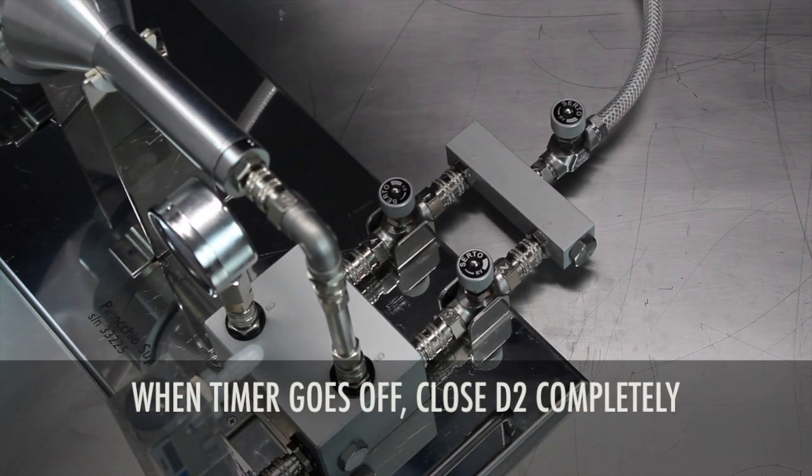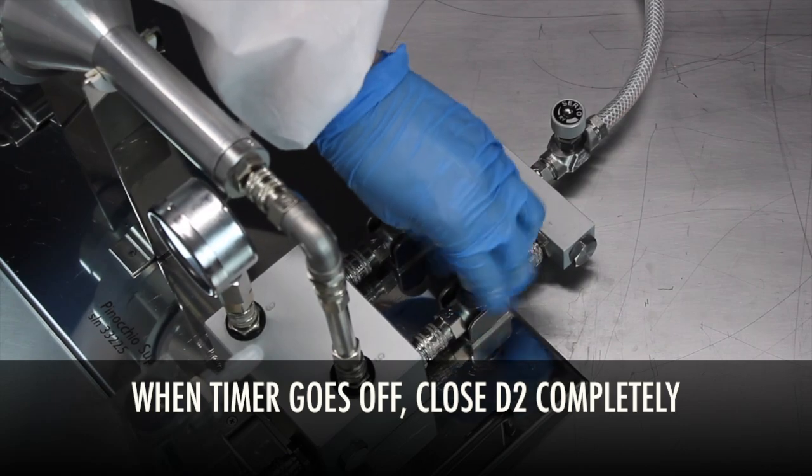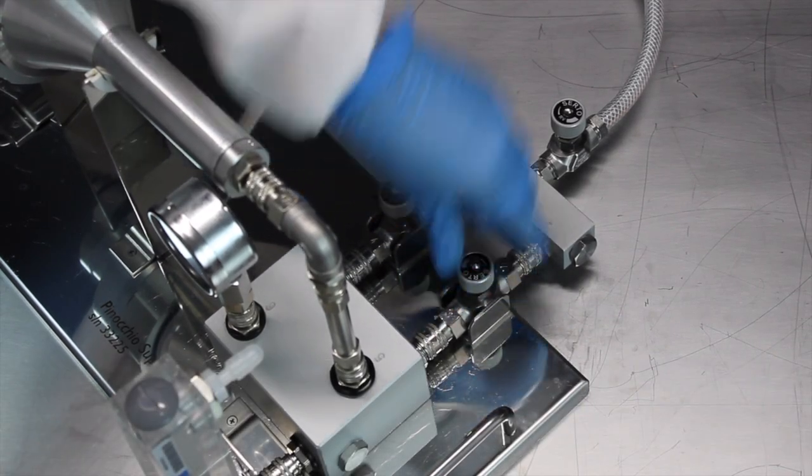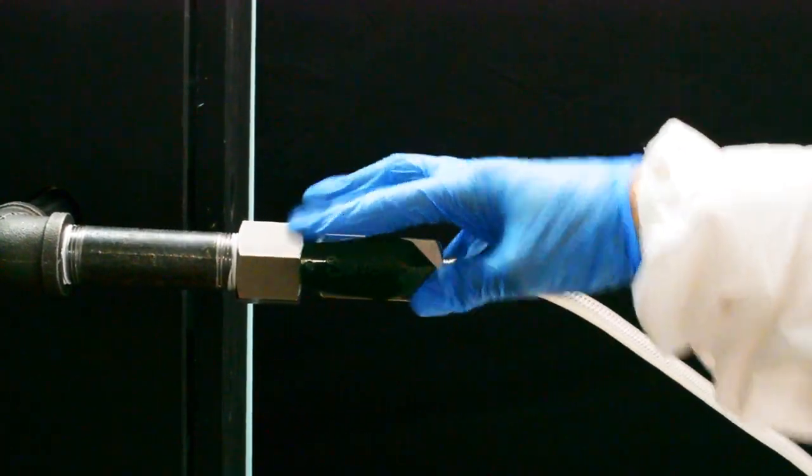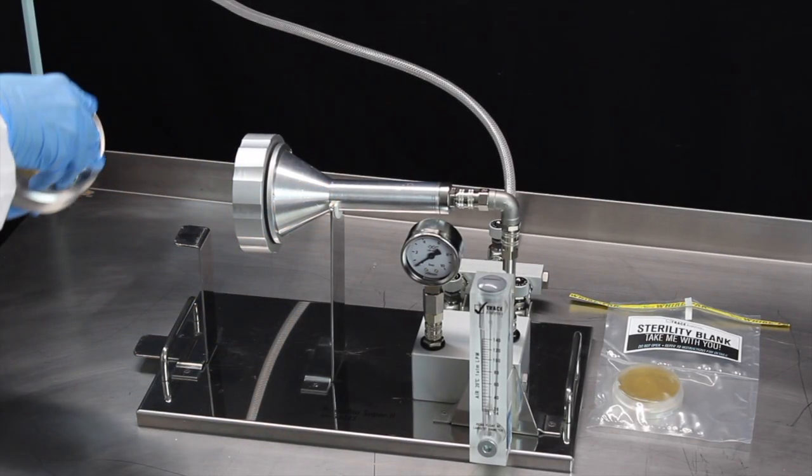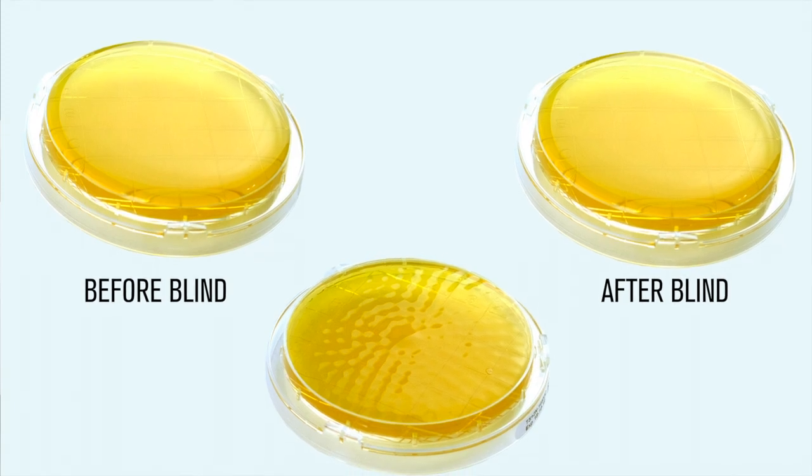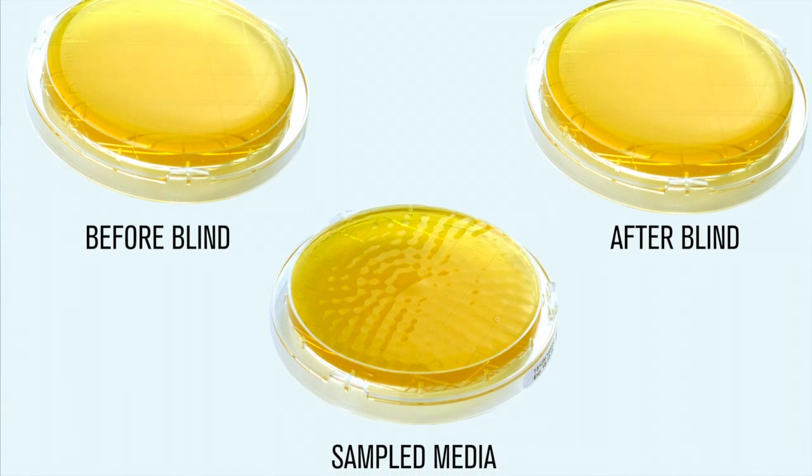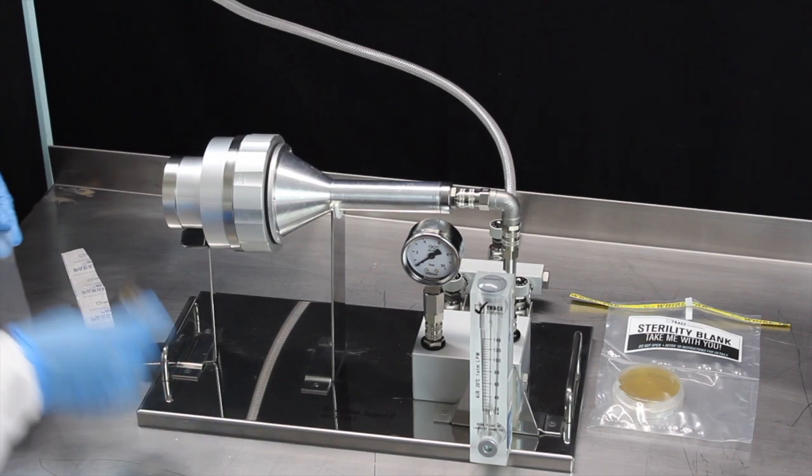When the timer goes off, completely close D2 and close the control valve at the sampling port. Remove the plate from the contact plate housing and immediately lock the lid in place. Agar should be dimpled at the end of the test, showing successful impaction of the compressed air onto the contact plate.